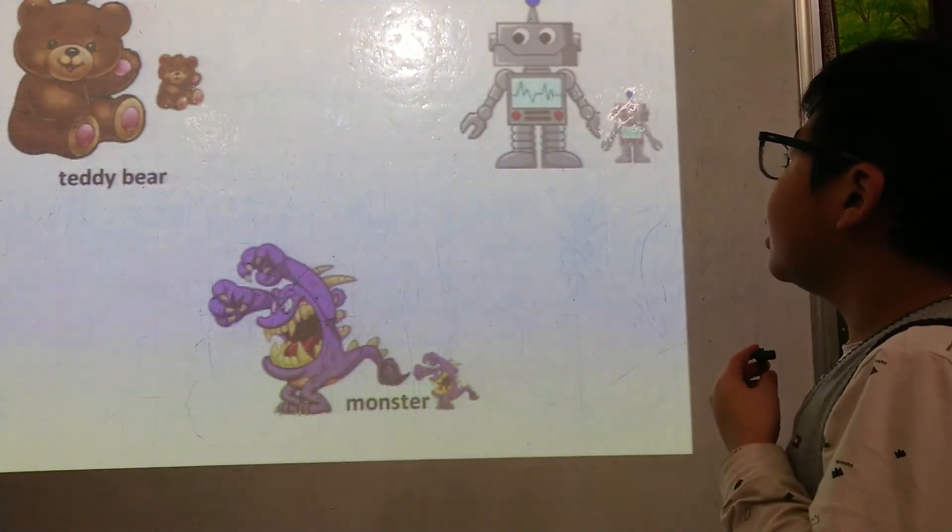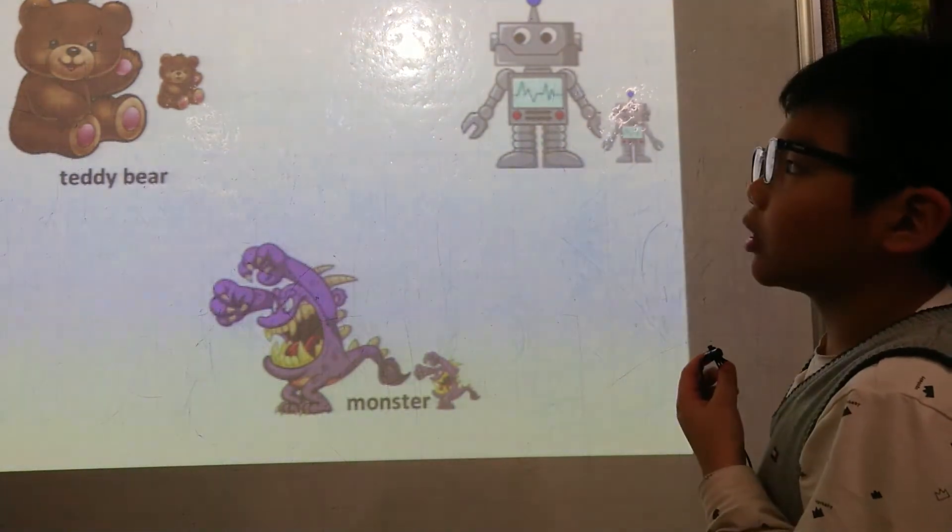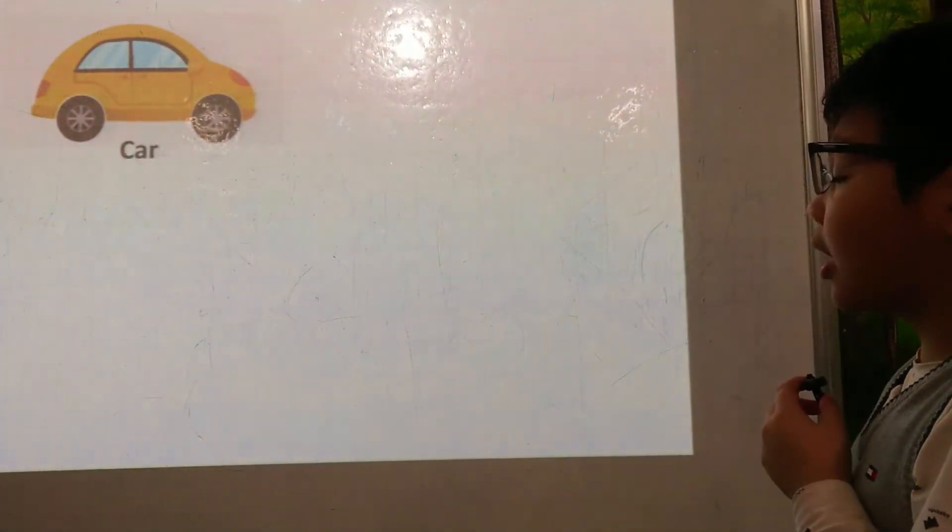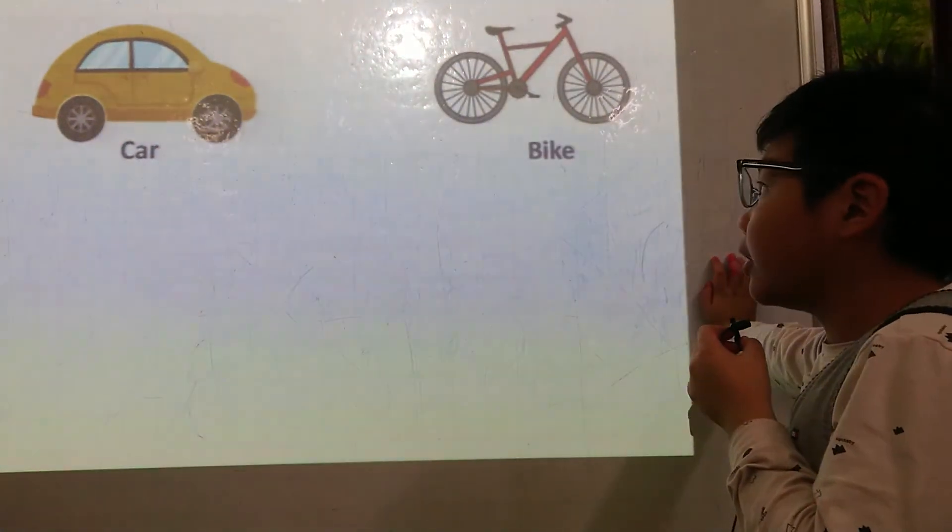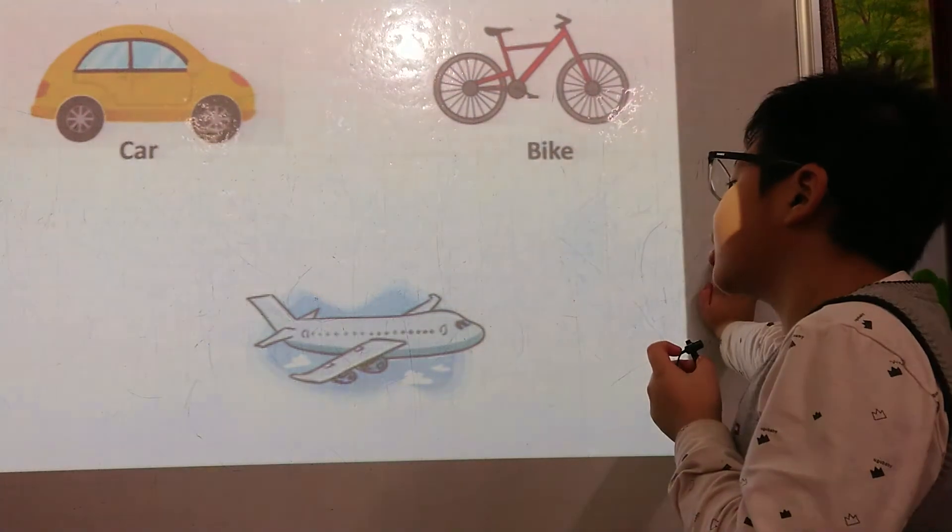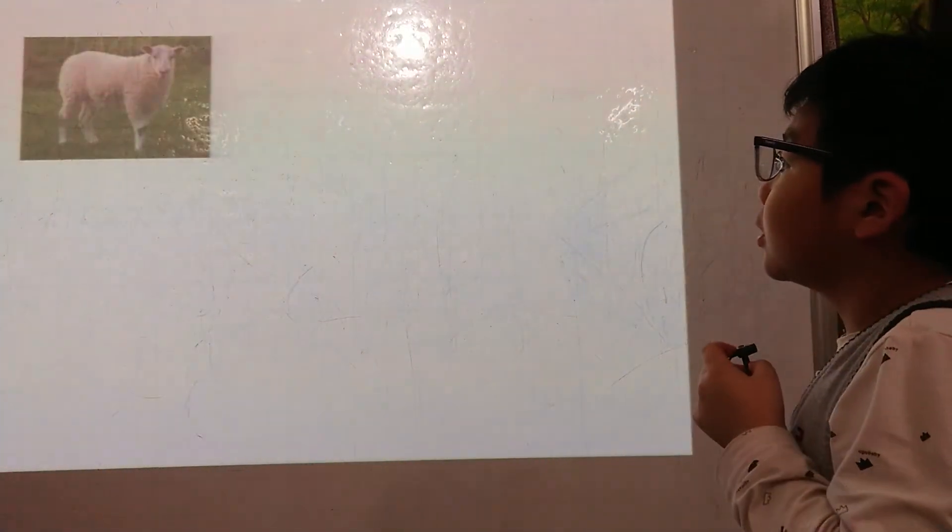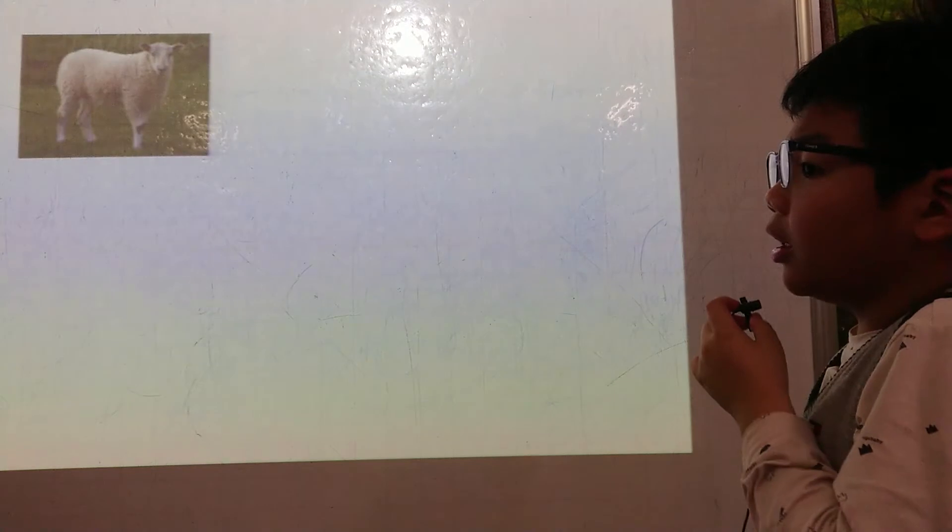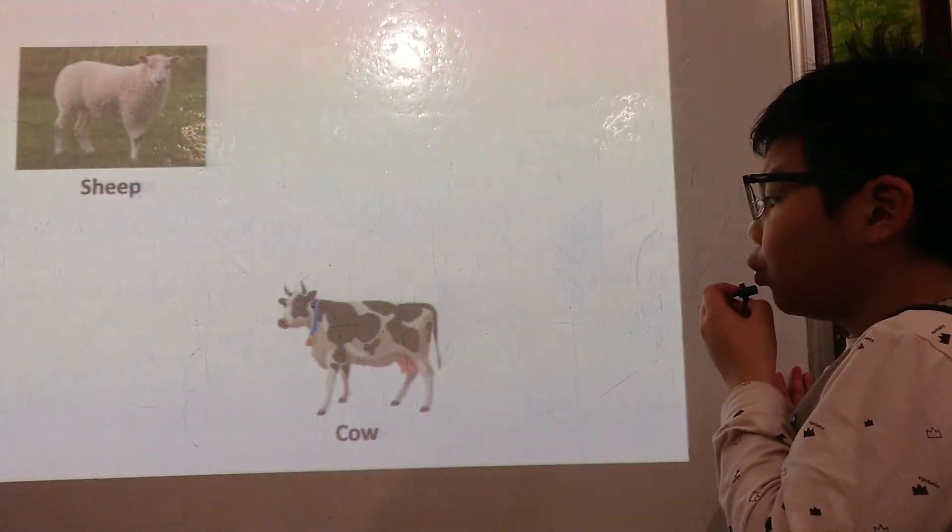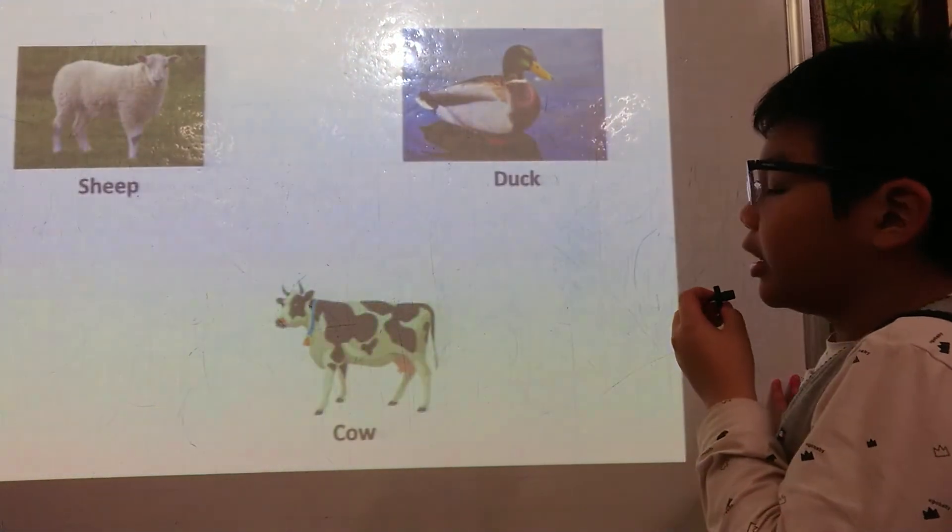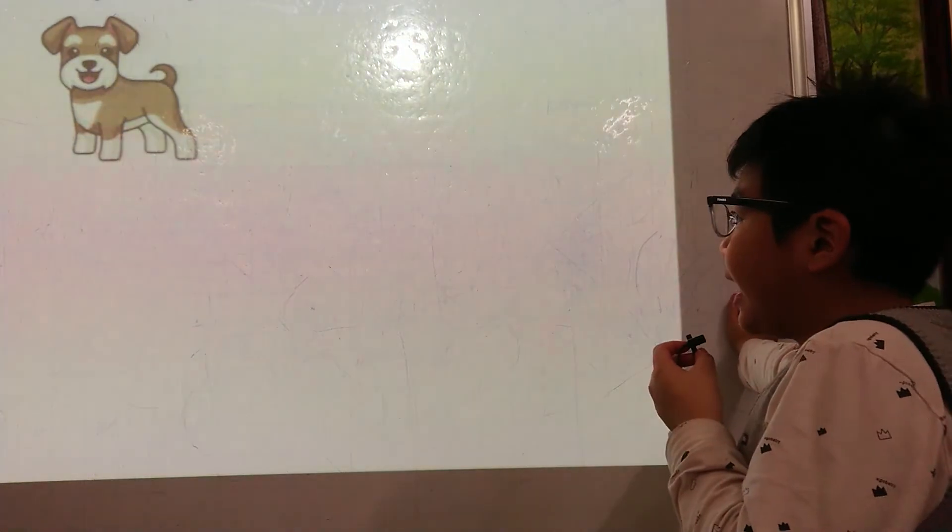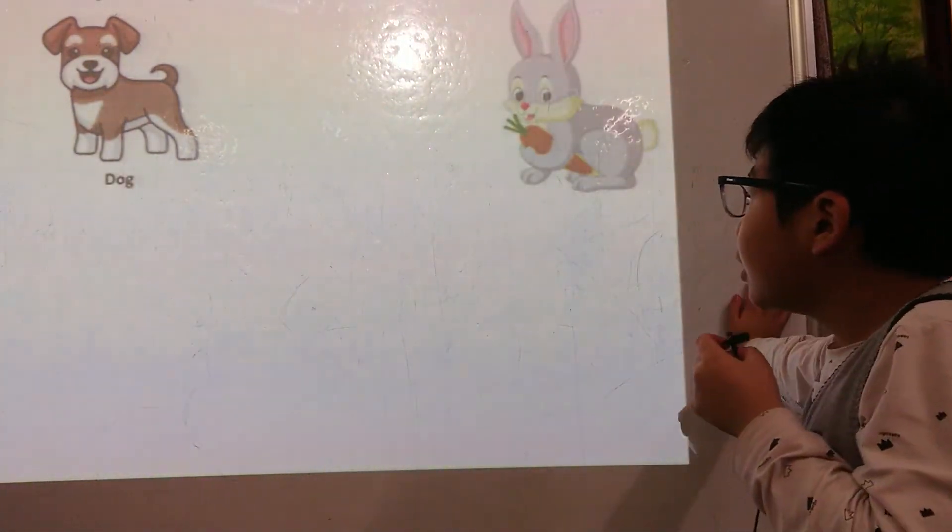What can you see? I can see a cat. I can see a car. I can see a backpack. I like dog.